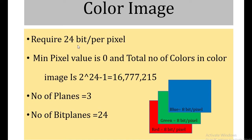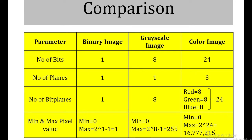The last type is the color image. A color image requires 24 bits per pixel. The minimum pixel value is 0, and the total number of colors in a color image is 2 raised to 24 minus 1, which equals 16,777,215. The total number of planes is 3 — red, green, and blue — and the total number of bit planes is 24. Each plane requires 8 bits per pixel.